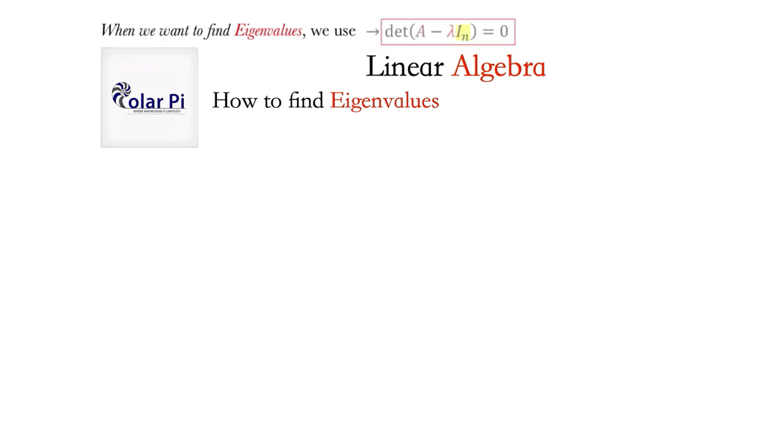Now, when we want to find eigenvalues, we use this equation here. In the previous video, I referred to this equation as the eigenvalue formula. In the previous video, which is our second video on eigenvalues and eigenvectors, I showed you where this equation comes from. In other words, I showed you how to derive it. But here in this video, I'm just going to give you examples of how to use it to find eigenvalues.